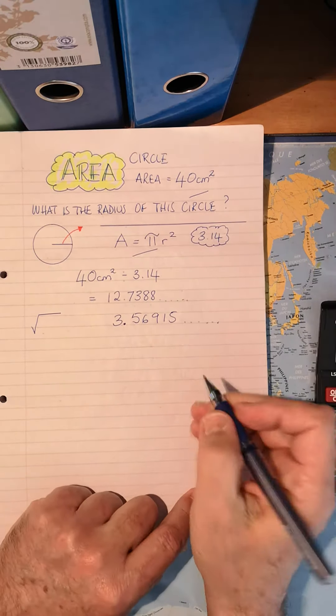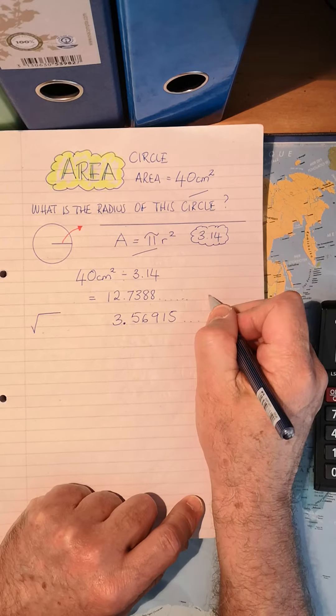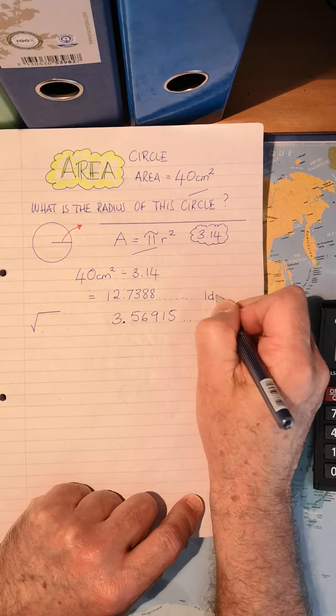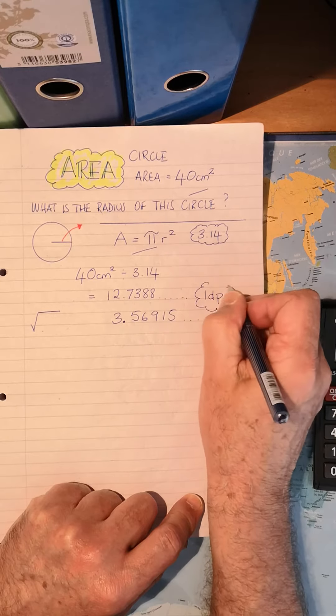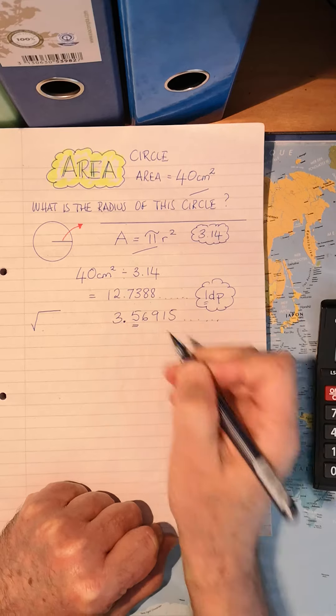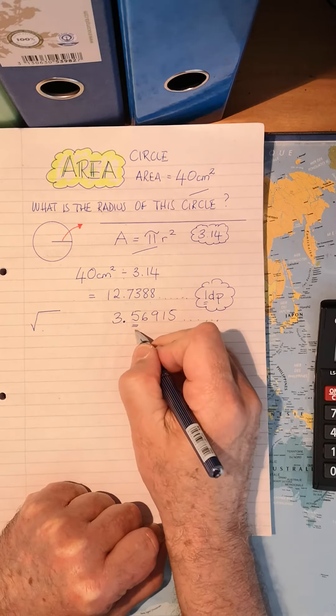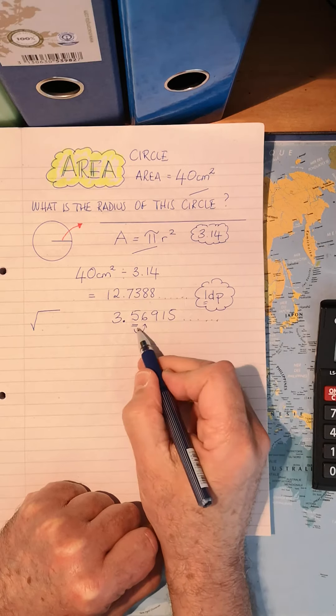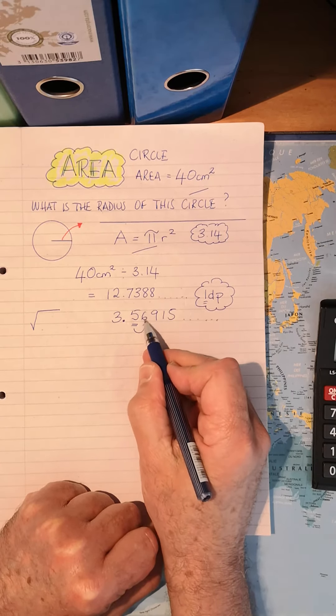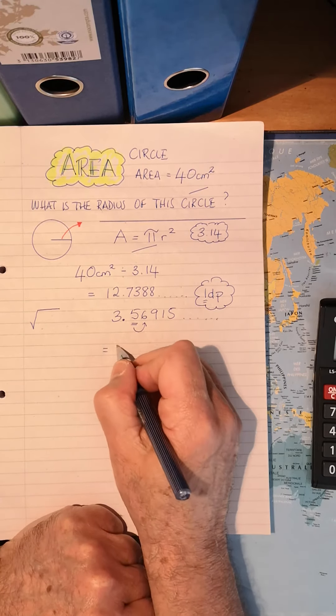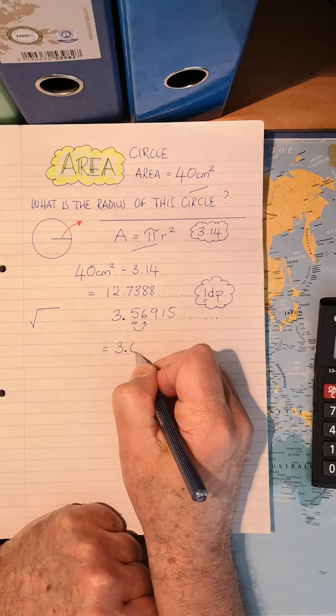Because for the most part, your teacher might say, round it to one decimal place, or two decimal places, and in this instance, we'll round it to one decimal place. So there's the first digit after the decimal point. So we always look to the right, and we ask ourselves, what is the number? It's a six. Is it five or higher? So yes. So my final answer is going to be 3.6.